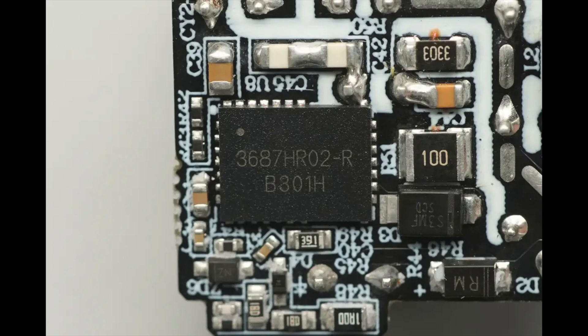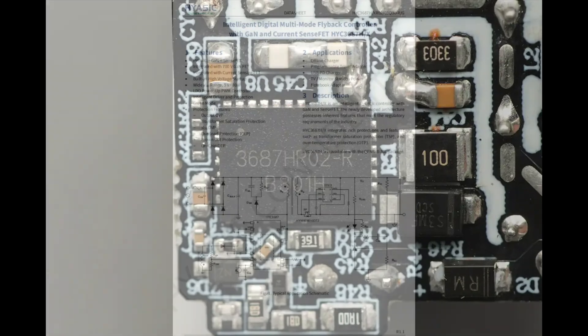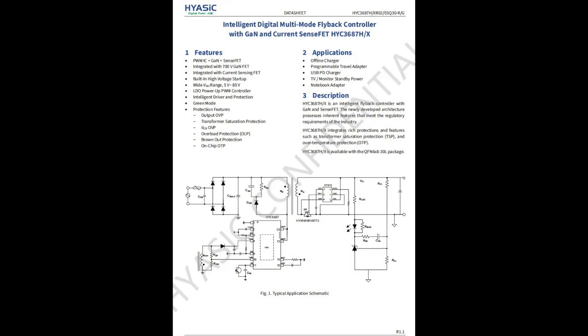Paired with a Huayuan synchronous rectifier chip, it ensures reliable system operation in CCM, QR, or DCM modes. The HYC-3687HRX integrates comprehensive protection features, including output over-voltage protection, transformer saturation protection, chip supply over-voltage protection, and overload protection.